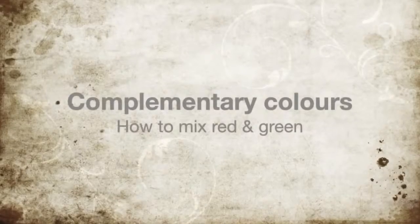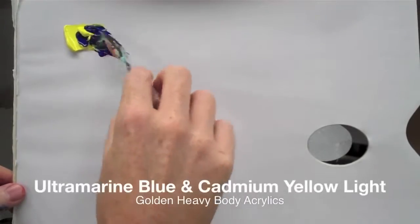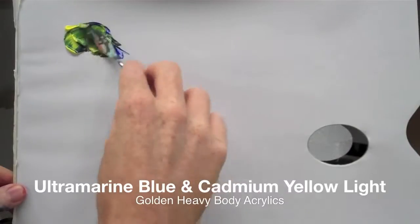Okay, let's get started. This is the green made with the ultramarine blue and cad yellow light.